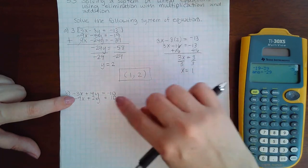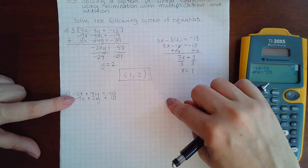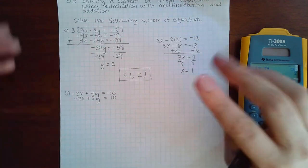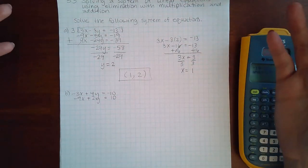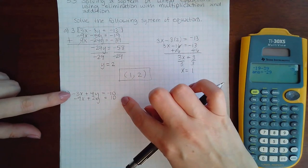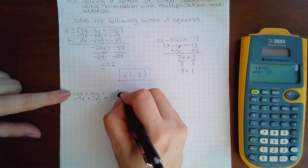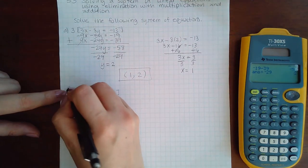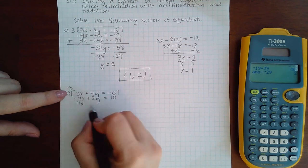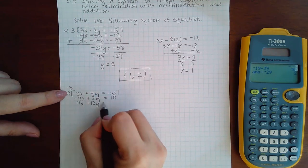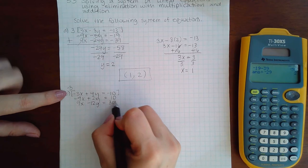There's nothing wrong with that, but if I can avoid it I do. And in this case I can avoid it if I just take the top one and multiply it by negative 3. So that becomes positive 9x, that becomes negative 12y, and this becomes positive 30.